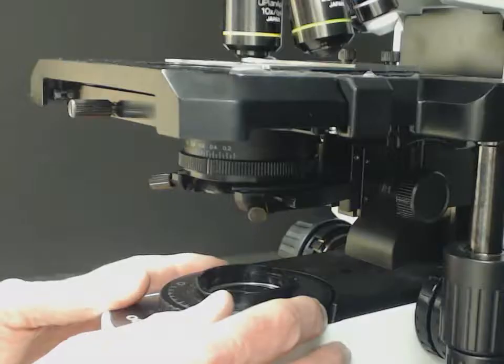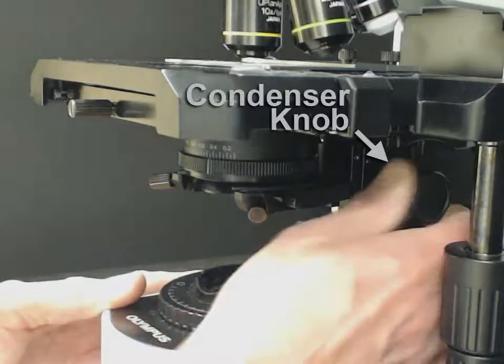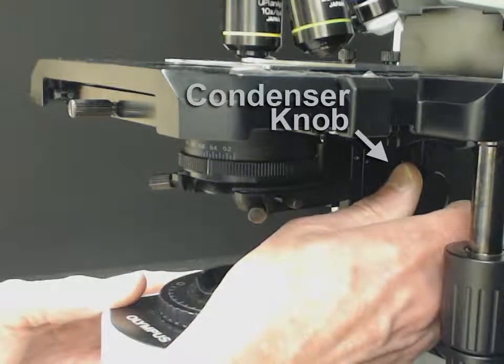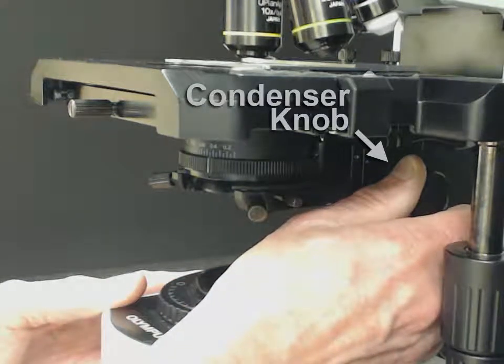Next, turn the knob of the condenser to focus the shadow image of the field diaphragm blades. Here's what you'll see on the microscope.